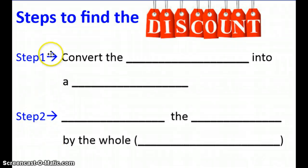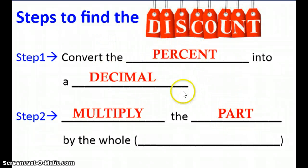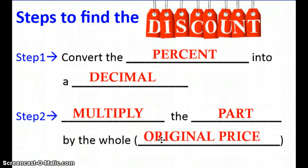Now we could look at steps to finding the discount. The first thing that we want to do is convert the percent into a decimal. Once we have that percent into that decimal, that part, then we can multiply the part, which is what we got in step one, which is the part. We're going to multiply that by the whole, which is the original price.